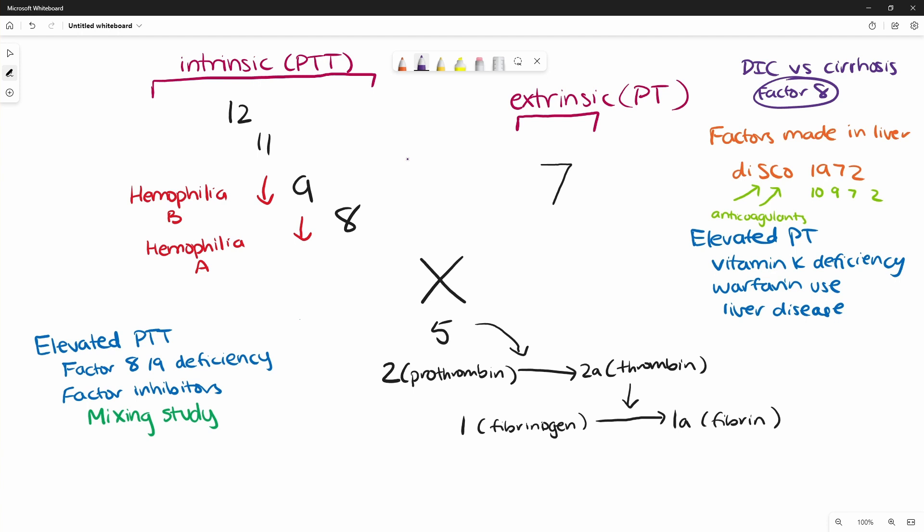So factor VIII is produced in endothelial cells. And so in cirrhosis, your factor VIII will actually be normal, because it's not made in the liver. But in DIC, you're going to have a low factor VIII, because DIC is just consuming all of your clotting factors all throughout. And so this is actually something we check when we're not sure if a patient is in DIC versus just having coagulation issues from their cirrhosis.